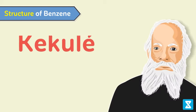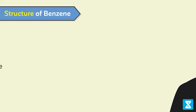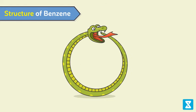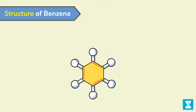Kekulé was the first chemist to deduce the ring structure of benzene. The solution came to him in a dream where a snake bit its own tail. Upon waking, he was inspired to deduce the ring structure of benzene with alternating pi bonds. However, Kekulé's structure was not able to explain why all the carbon-carbon bonds are of the same length.